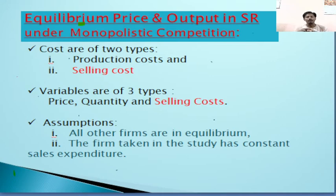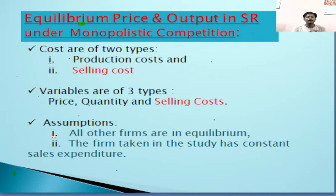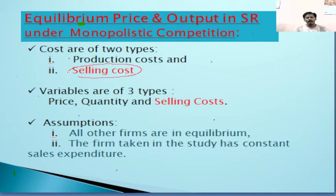The number of variables increases from two (price and quantity) to three. As a result, determining equilibrium price and output becomes more complex. To simplify the analysis, we assume that the firm under study has to attain equilibrium while all other firms have already done so, and that the selling cost of the firm is constant.